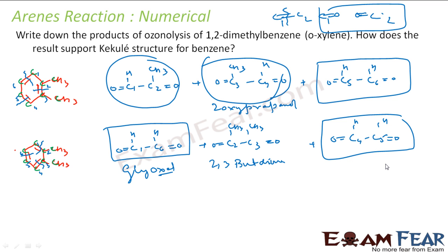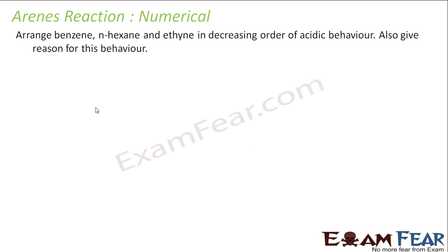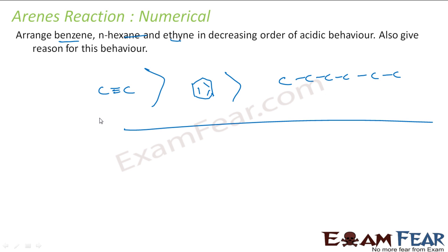The next question is to arrange benzene, n-hexane, and ethyne in decreasing order of acidity. The compound with a triple bond — ethyne — is most acidic. Then comes benzene (sp2 carbons, double bond character), and then n-hexane with only single bonds. So the decreasing order of acidity is: ethyne > benzene > n-hexane.